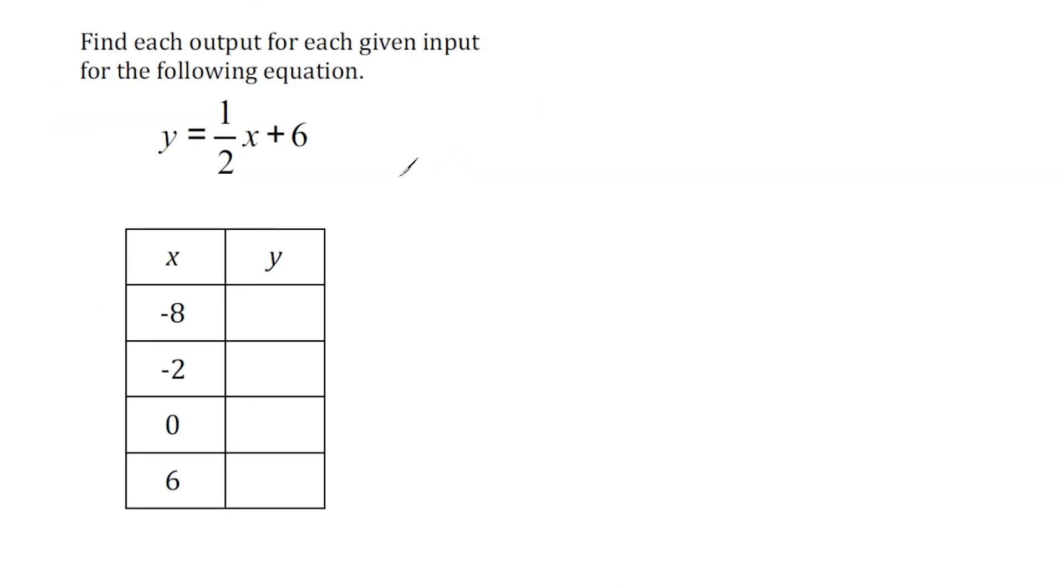So what we have to do here is we have to use this equation to find each output for each one of these given inputs. Now, in general, x is always considered our input, and y is considered our output. So we're going to put these values into this equation and solve for each one of these. So basically, we have four quick calculations to do.